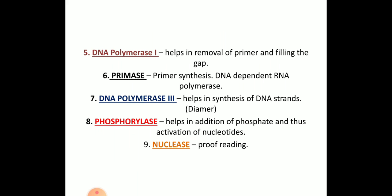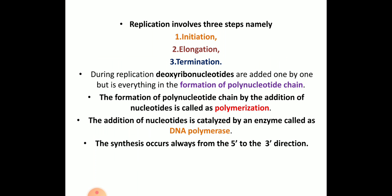Phosphorylase helps in activation — that is, phosphate groups are added to the nucleotides — and it helps in proofreading. These are the important enzymes for DNA replication. Replication involves three main steps: initiation, elongation, and termination. During replication, deoxyribonucleotides are added one after another forming a polynucleotide chain, and this process is called polymerization. The addition of nucleotides is catalyzed by DNA polymerase 1 or 3, and synthesis always starts from the 5' to 3' direction.